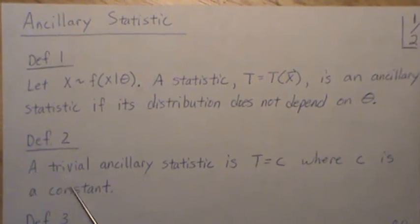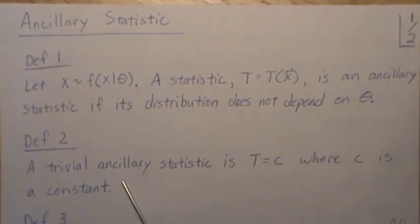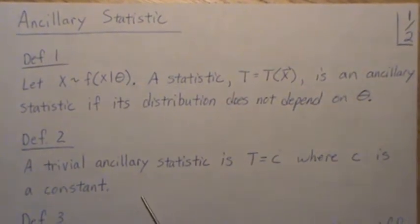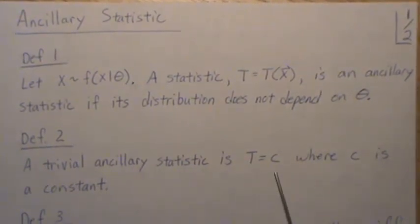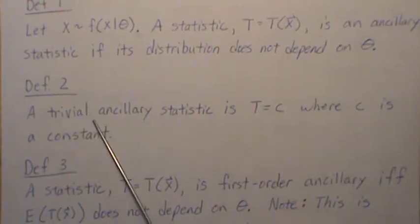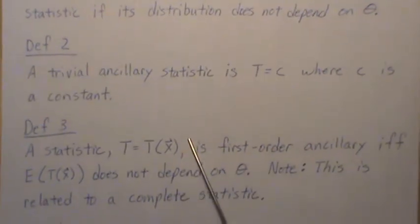Now, definition 2 is a trivially ancillary statistic is a constant function T equals C, where C is a constant. So it's trivially independent of theta. So often we don't look at these, the trivial ancillary statistic.